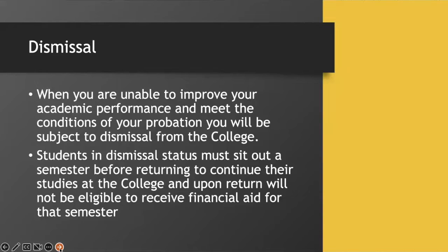If you continue to have academic difficulty, you may be dismissed from the college. Dismissal means when you are unable to improve your academic performance and meet the conditions of your probation, you will be subject to dismissal. Students in dismissal status must sit out at least one semester before returning, and upon return may not be eligible to receive financial aid for that semester.